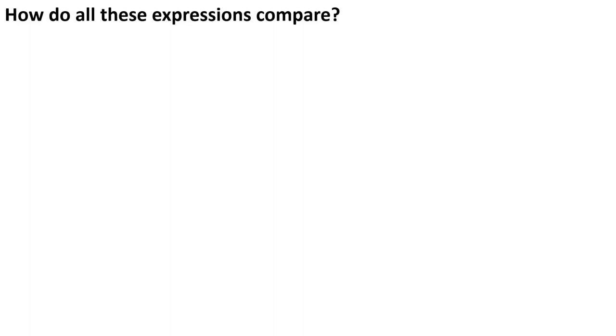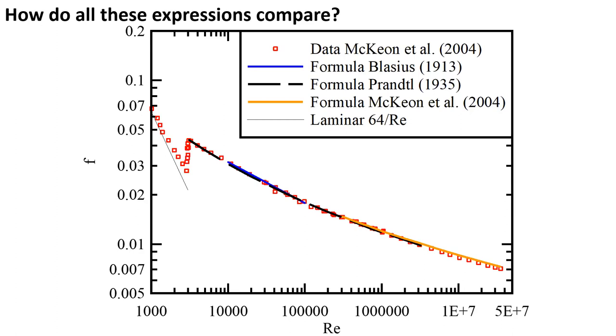So, how do these expressions compare? This is illustrated on this log-log graph with the Darcy friction factor on the vertical axis and the Reynolds number on the horizontal axis, comparing experimental superpipe data, the small red squares, with the Blasius formula, the Prandtl formula, and the superpipe formula.